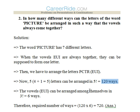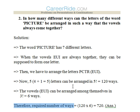We need to take care of one more fact. Although we assumed EUI as one letter, the vowels can shuffle inside — UIE, IUE, UIE, or EIU can all appear. So the vowels E, U, I can also be arranged among themselves in 3 factorial ways, which is 6 ways. Therefore, the required number of ways of arranging the letters of PICTURE such that vowels always come together is 120 into 6, which is 720.